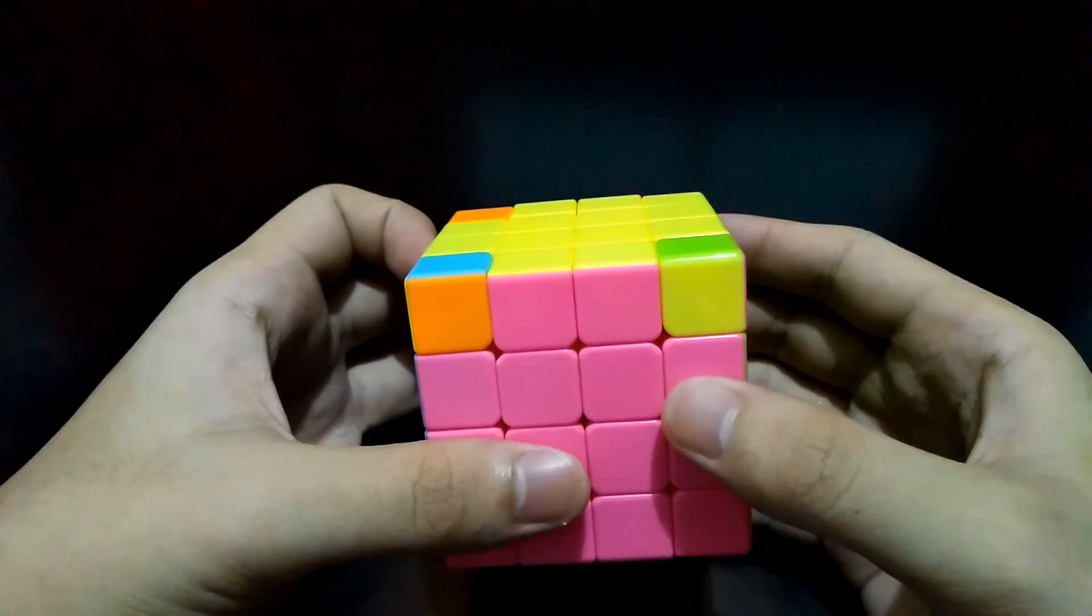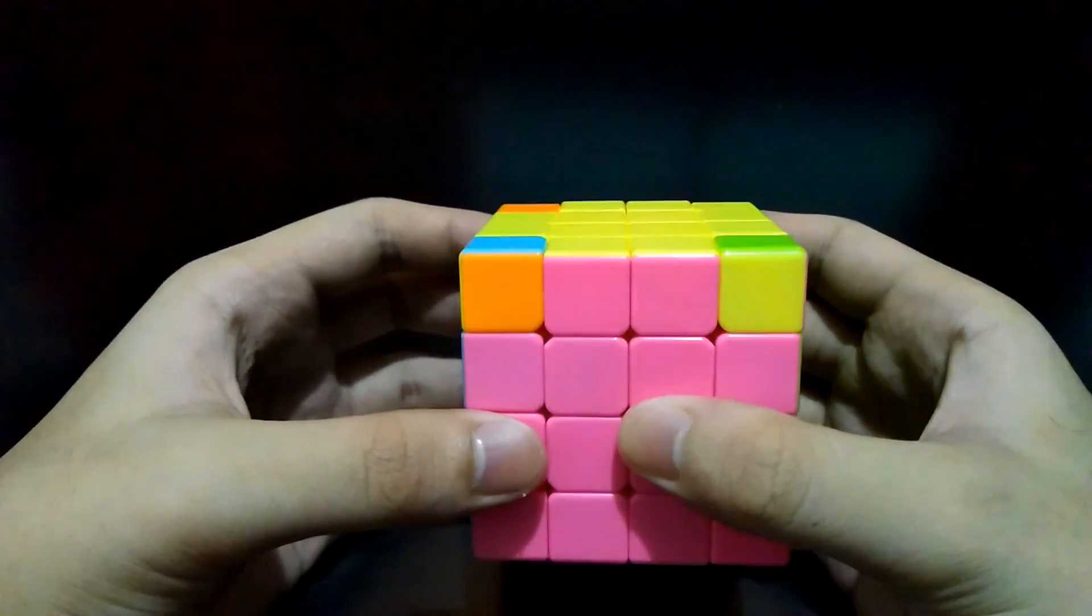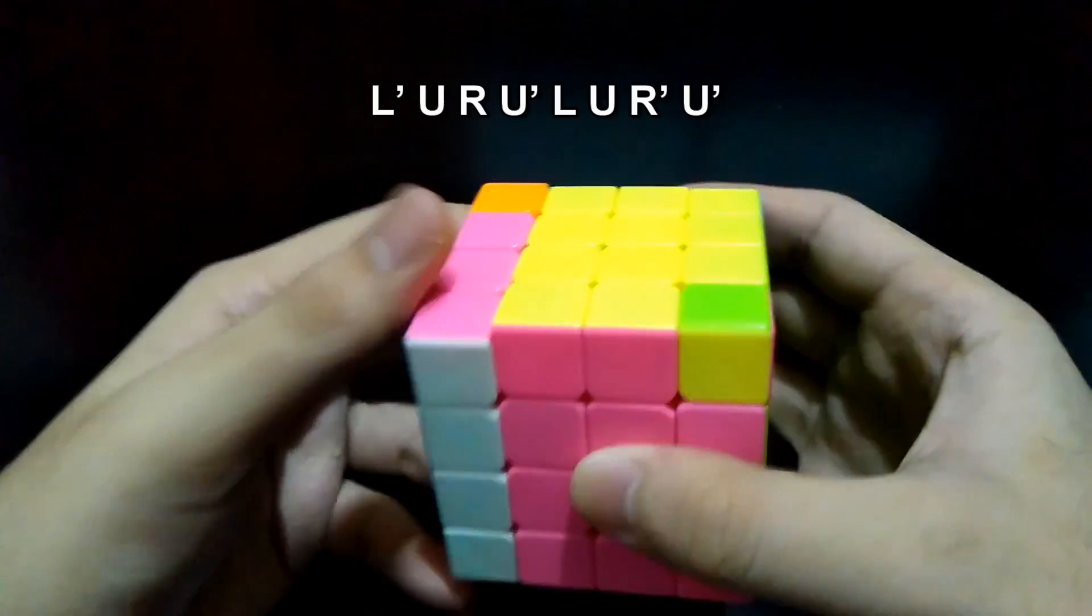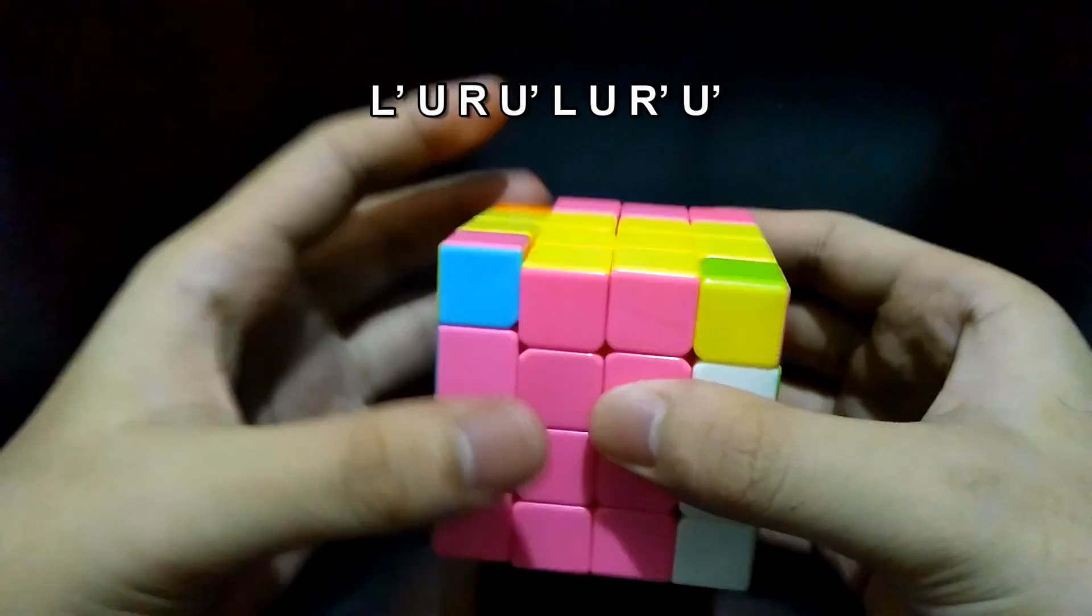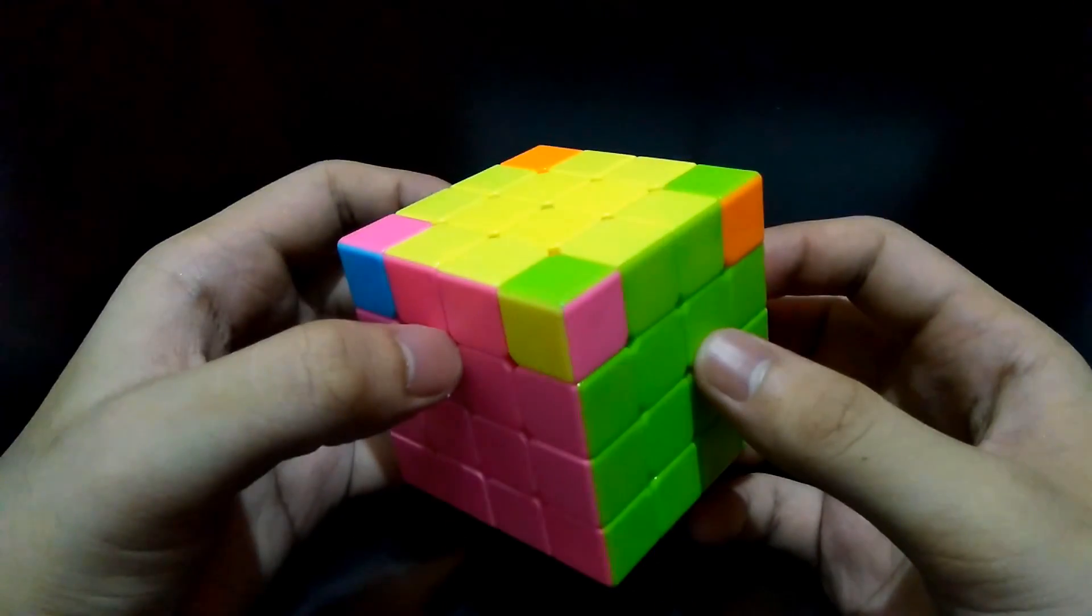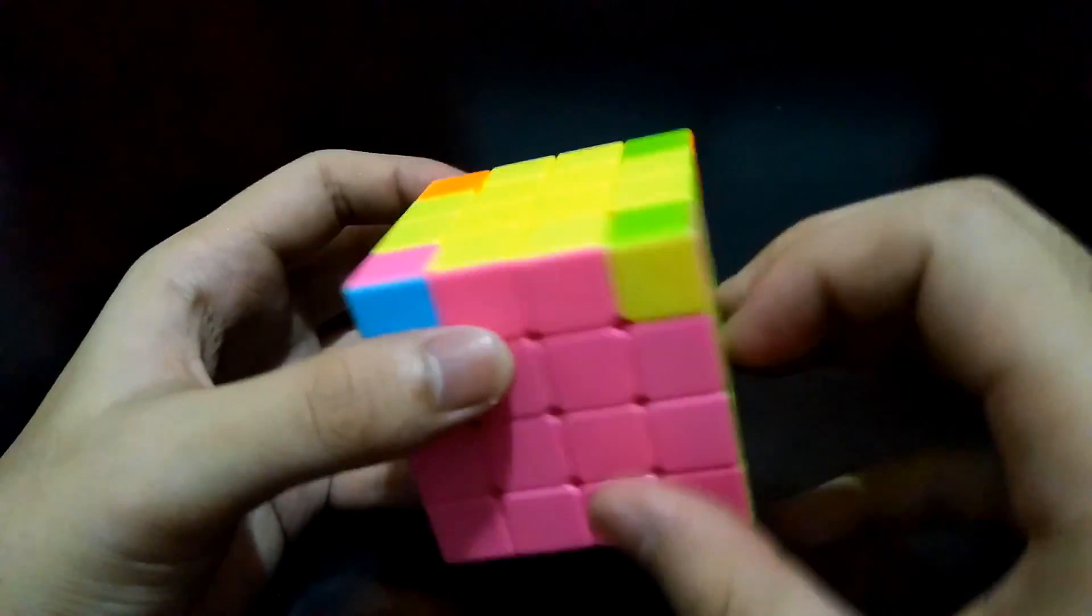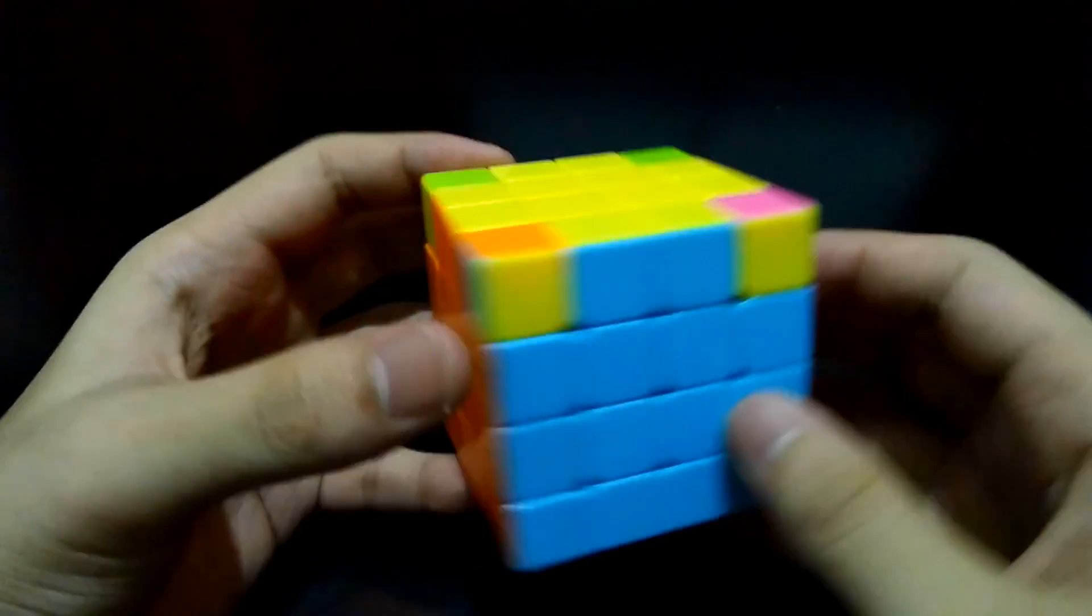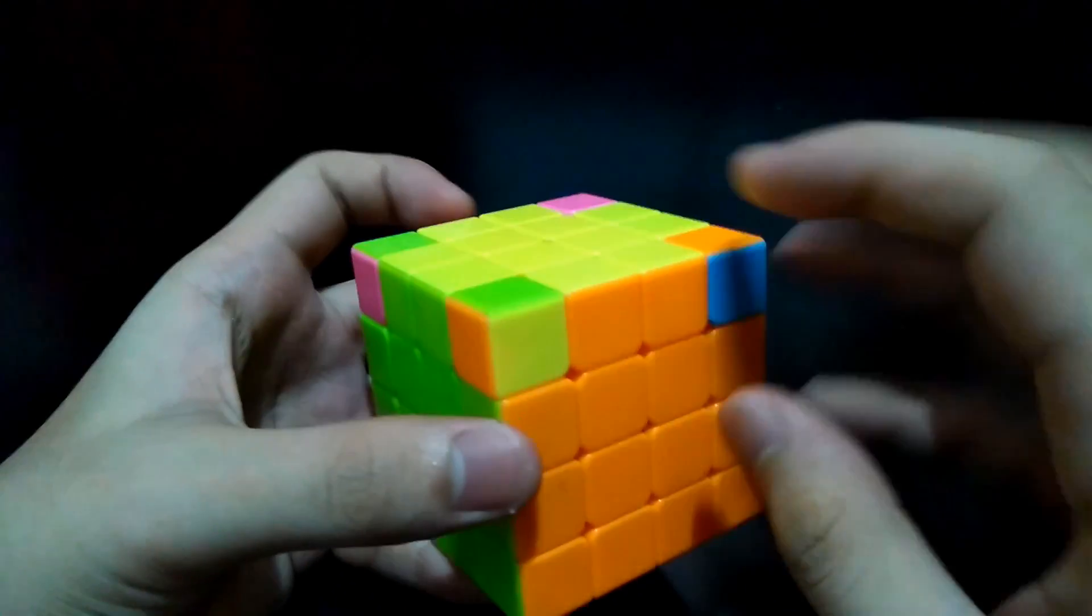Do the algorithm again if it's not yet still correct: Left prime, Up, Right, Up prime, and Up, Right. There you go, this one's already right place, this one as well, this one as well, and this one too. Now we're done.